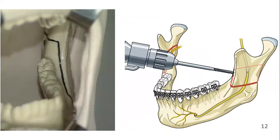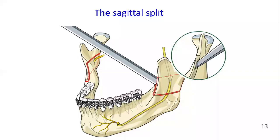The third corticotomy is along the anterior border of the ascending ramus and connects the first two lines — that is, the lingual cut above the mandibular foramen and the buccal cut. The final split is completed with a thin osteotome, splitting the entire ascending ramus from the anterior to the posterior border of the ramus.